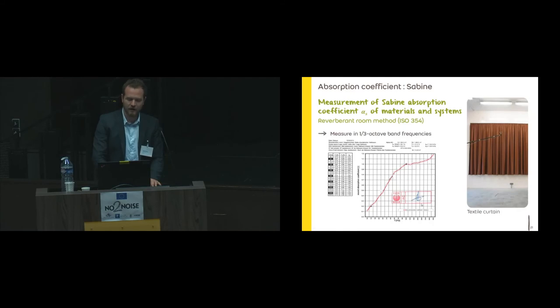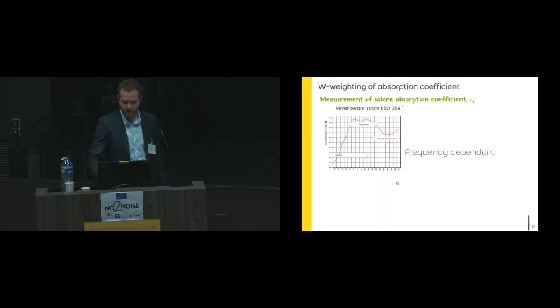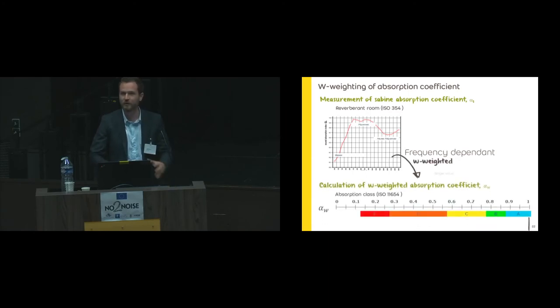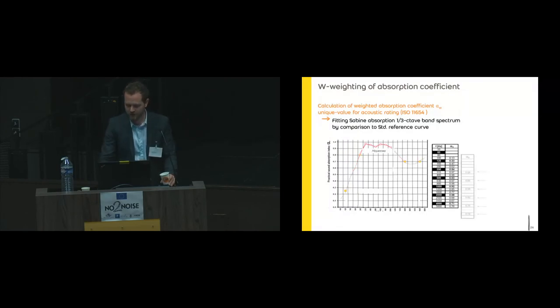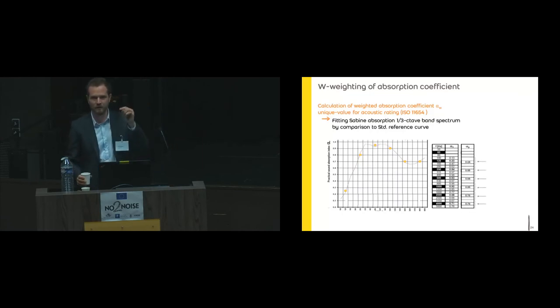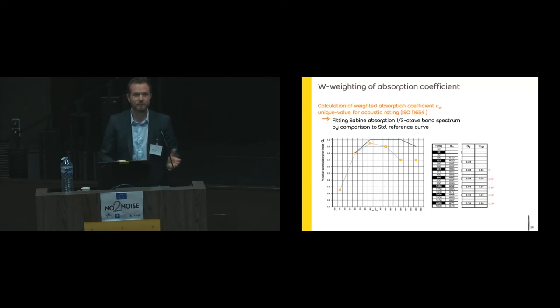You obtain this kind of certificate—classical absorption curves regarding frequency. This is normal. What is more funny is that you have frequency-dependent properties, and the marketing guys, industrial guys, they prefer a single value number. For that, you use the W weighting. How do you do that? You use ISO 11654.